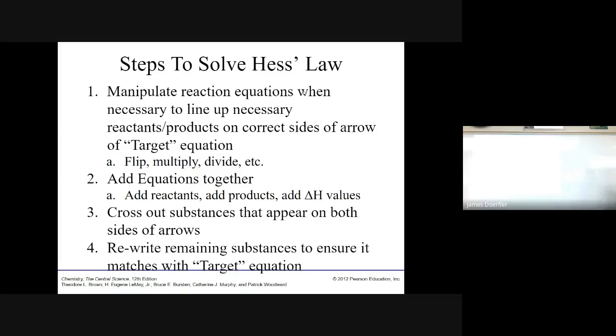So, here are the steps. There are four steps to solving Hess's law problems. First one is, you need to manipulate the reaction equations when it's necessary. Sometimes you won't have to touch them. Sometimes they're already good to go. And you manipulate them to line up necessary reactants and or products on the correct sides of the arrow in accordance with our target equation. So when I say manipulate, you can flip the equation. You can multiply the equation. You can even divide the equation. That's why I said that, quote, unquote, mathematically arranged in the goal of Hess's law.